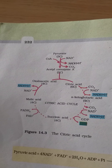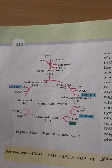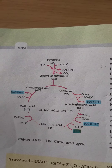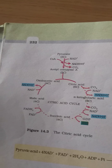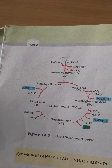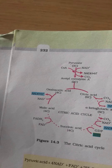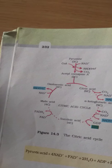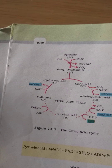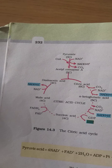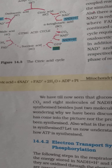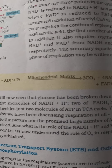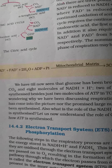In coupled reactions, GTP, GDP, NAD/NADH, and FAD/FADH2 are all involved. The continuous oxidation of acetyl coenzyme A via the TCA cycle requires continuous replenishment of oxaloacetic acid, as well as regeneration of NAD⁺ and FAD from NADH and FADH2 respectively. This all takes place in the mitochondrial matrix.